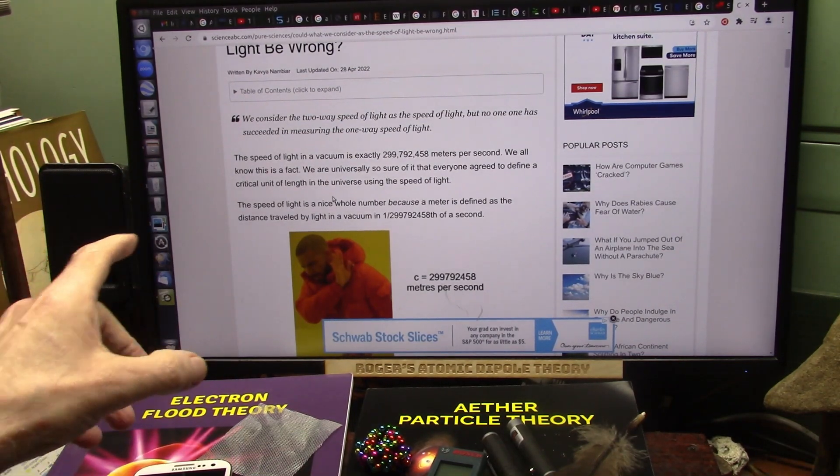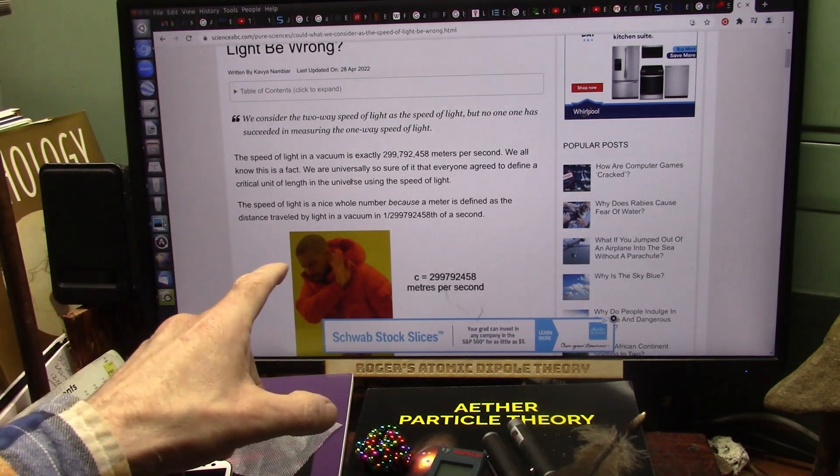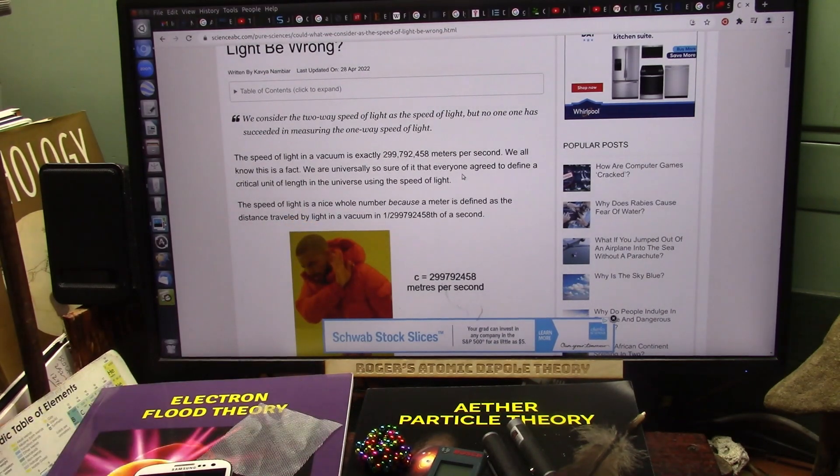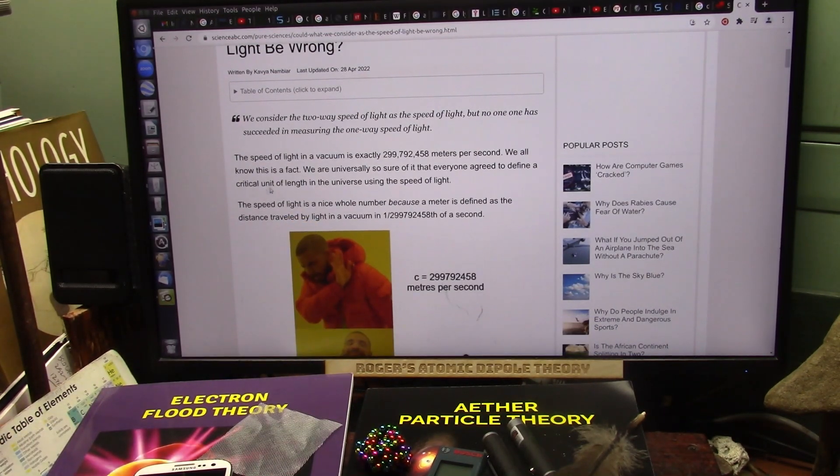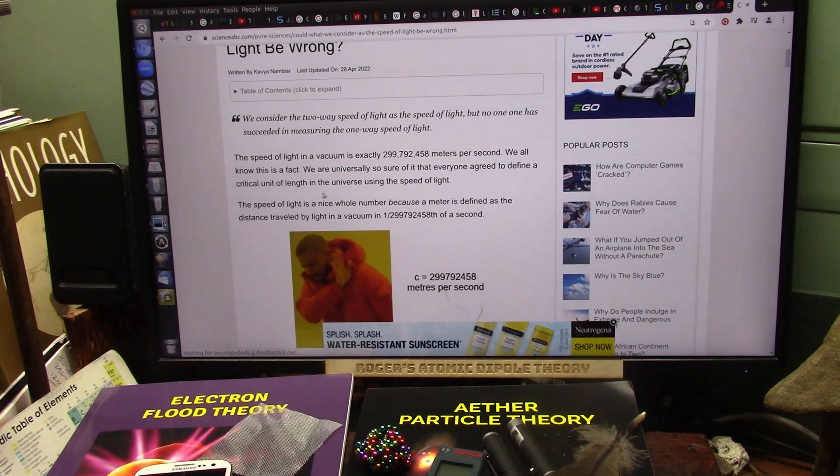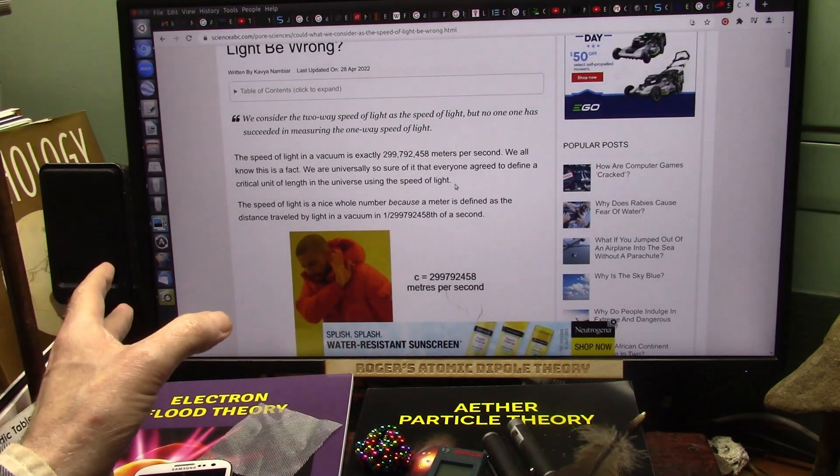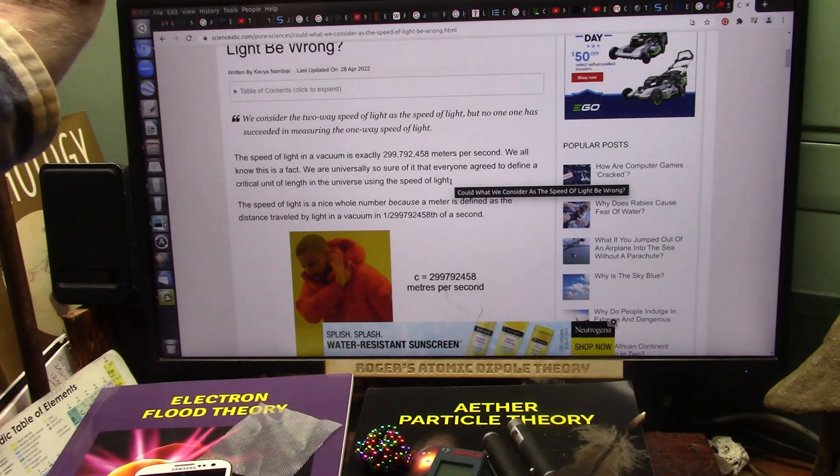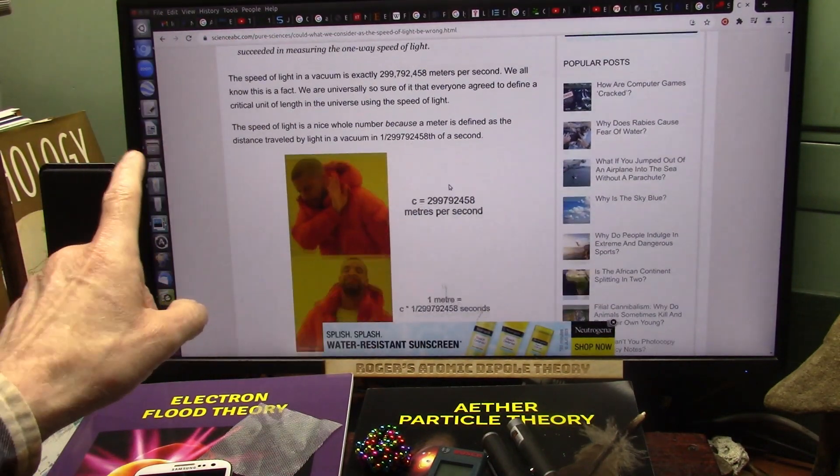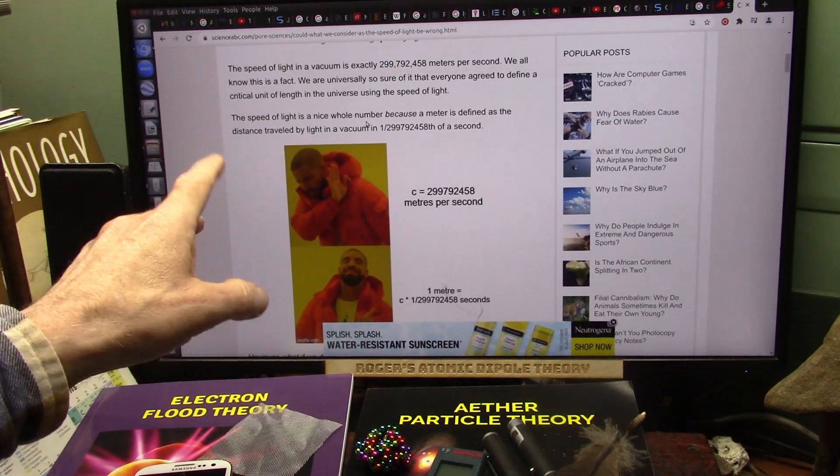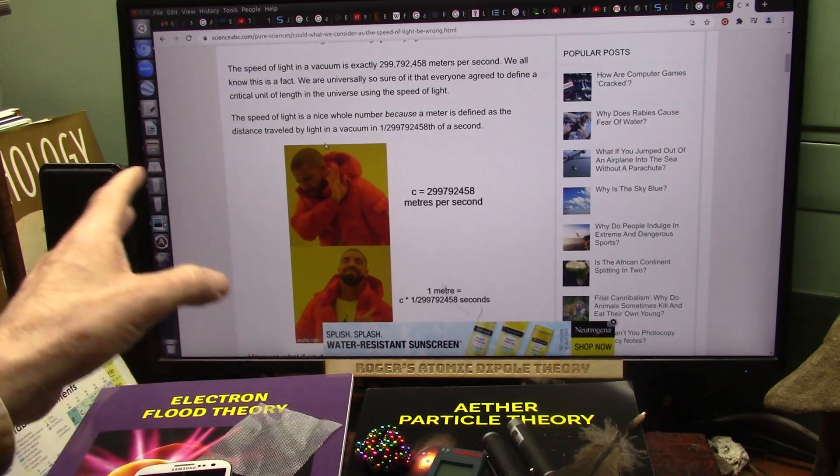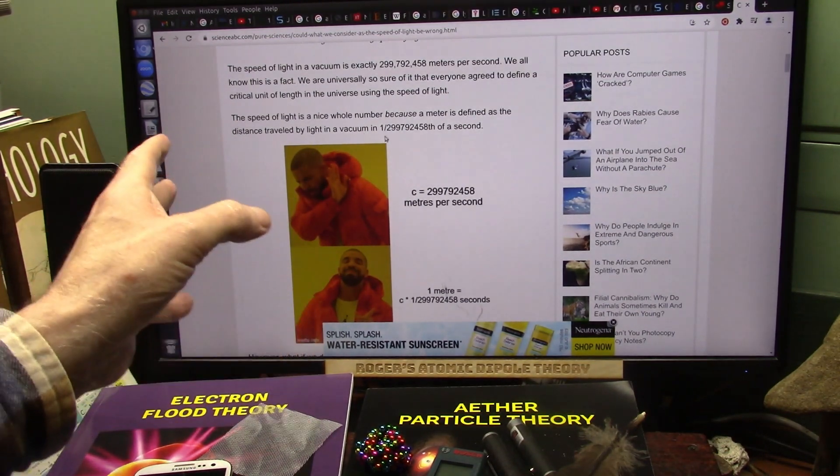Well, we've been forced to agree it's a fact. We're universally so sure of it that everyone agreed to define a critical unit of length in the universe using the speed of light. The speed of light is a nice whole number because a meter is defined as the distance traveled by light in a fraction of a second.